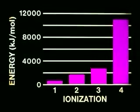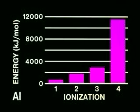This graph shows the way in which the ionization energies of the aluminum atom increase as successive electrons are removed. Notice that the ionization energy increases with each successive removal of an electron.